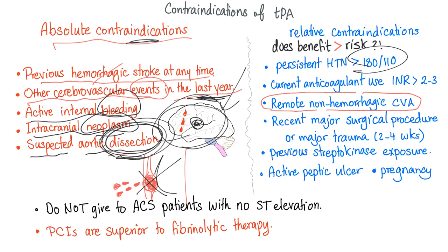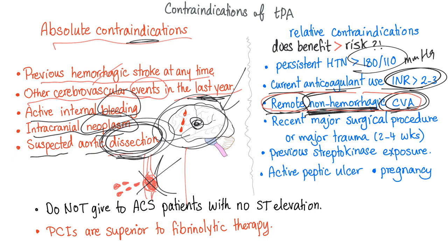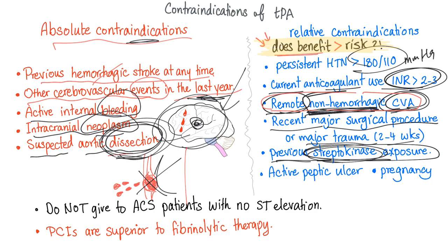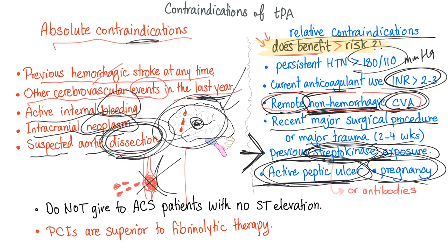Relative contraindications: persistent severe hypertension (180/110 mmHg); current anticoagulant use with INR higher than 2 to 3; remote non-hemorrhagic cerebrovascular accident — if it was 5, 10, or 20 years ago, TPA can still be given; recent major surgical procedures; major trauma within 2 to 4 weeks; previous streptokinase exposure due to allergy risk or antibody formation; active peptic ulcer; and pregnancy.